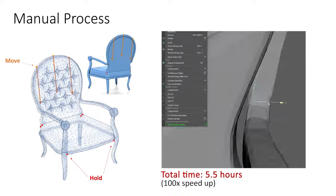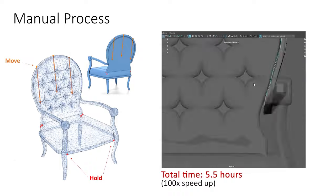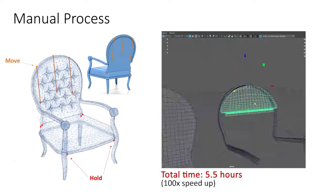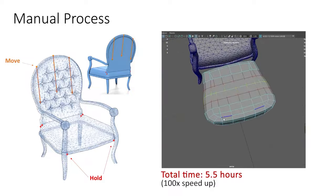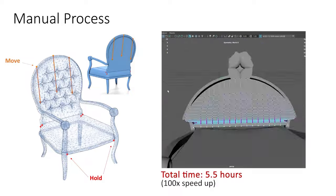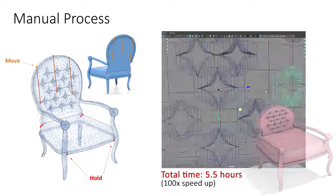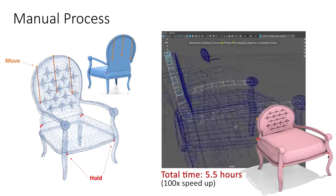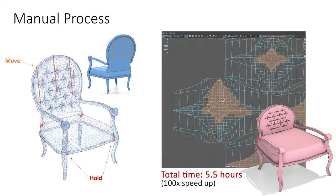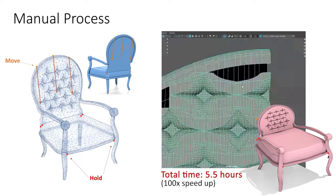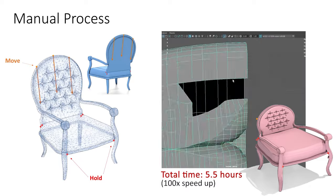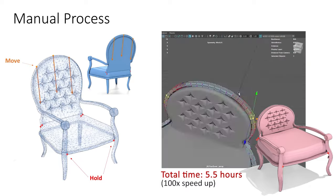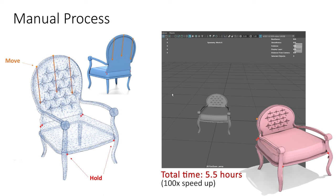Artists often need to reshape 3D models of human-made objects by changing the relative proportions or scales of different model parts while preserving the look and structure of the inputs. Manual reshaping takes a lot of time — it took an artist 5.5 hours to reshape one model. We aim to automate this process and enable artists to generate similar results algorithmically and quickly.